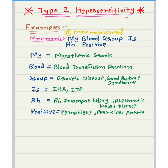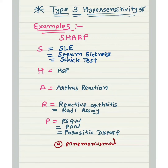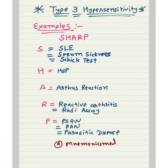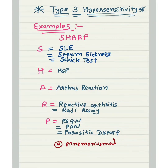Now we will learn about Type 3 hypersensitivity reaction. The mnemonic is SHARP: S for SLE and serum sickness, H for HSP, A for Arthus reaction, R for reactive arthritis and RPGN assay, P for PSGN, PAN, and parasitic disease. You have to remember these examples — the mnemonic is SHARP.